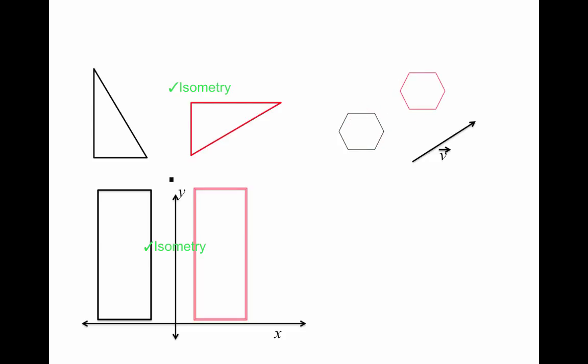but it's the same shape. We've simply just moved it and therefore it is also an isometry. So reflections, rotations, and translations are isometries.